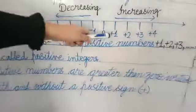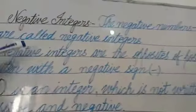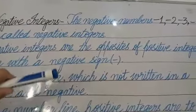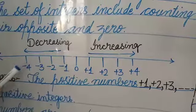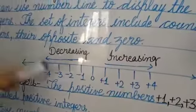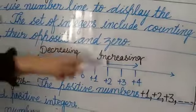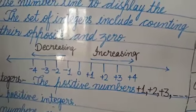Positive numbers can be written with or without a positive sign. Now point number four: what is a negative integer? The negative numbers — minus one, minus two, minus three and so on — are called the negative numbers. On this number line, minus one, minus two, minus three, minus four — these are the negative integers. Point number five: the negative integers are the opposite of the positive integers, written with a negative sign. You must compulsory mention the minus sign.